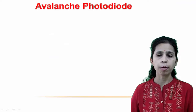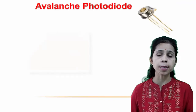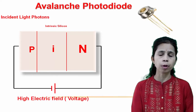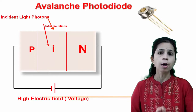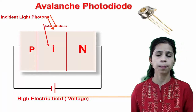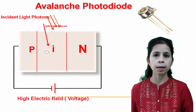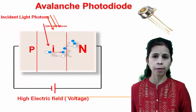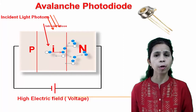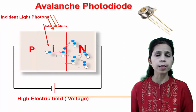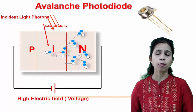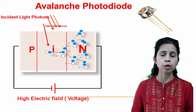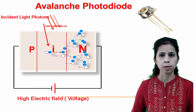In the PIN photodiode, the reverse saturation current increases almost linearly with the level of illumination. The avalanche photodiode is a PN junction diode operating in the avalanche region. The electron-hole pairs created by incident light are accelerated by a very high electric field, achieving photon multiplication of carriers by a factor of nearly 50 or more. These avalanche photodiodes are also ultrafast diodes.